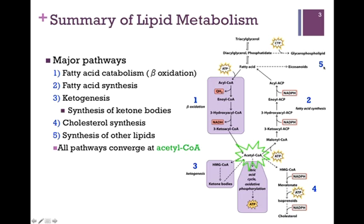And lastly, number 5, we start with fatty acids in order to synthesize other lipids. We'll consider each of these in turn, but what we can see is that all of these pathways converge at acetyl-CoA, a very key intermediate. This illustration coordinates all the different pathways of lipid metabolism — it's a nice way of organizing your thoughts, and you may want to return to it as we look at more of the details.